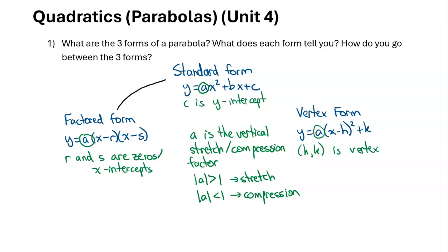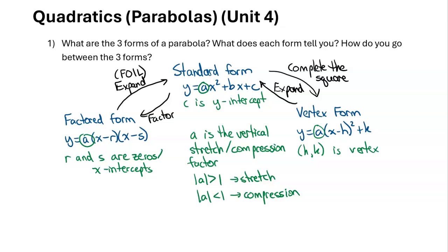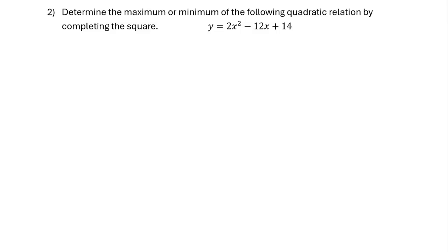How do you go between those forms? To get from factored form to standard form, you just expand — foil it out: first, outside, inside, last. To go from standard form to factored form, you need to factor. To go from standard form to vertex form, you need to complete the square, which we'll do later. Going backwards from vertex form to standard form, you expand it just like factored form, recognizing that x minus h squared is the same binomial times itself. There's no way to go directly between vertex form and factored form — you have to go through standard form.